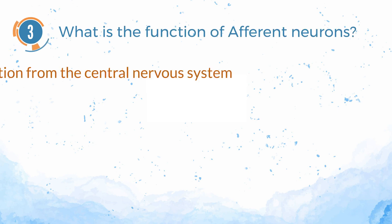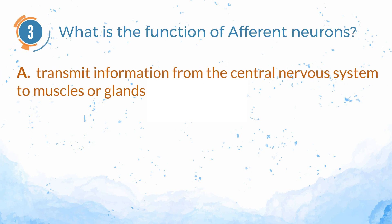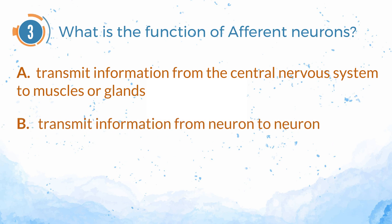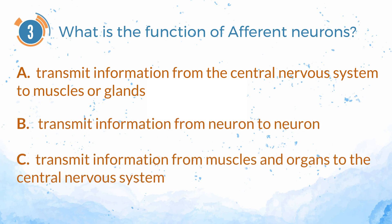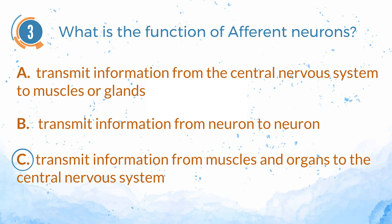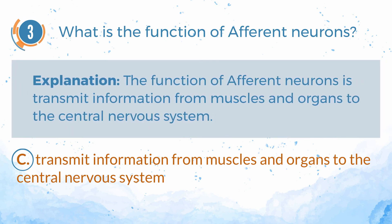Number 3. What is the function of afferent neurons? A. Transmit information from the central nervous system to muscles or glands. B. Transmit information from neuron to neuron. C. Transmit information from muscles and organs to the central nervous system. The answer is C — transmit information from muscles and organs to the central nervous system. The function of afferent neurons is to transmit information from muscles and organs to the central nervous system.